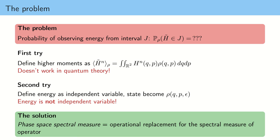To do this in general we need an operational replacement for the spectral measure of an operator, and we call this replacement the phase-space spectral measure. One can characterize what a phase-space spectral measure is — it's given by some set of functions and a rule for computing probabilities from them. If you are interested in how to construct the phase-space spectral measure and how to compute probabilities from it, please see the article linked in the description.